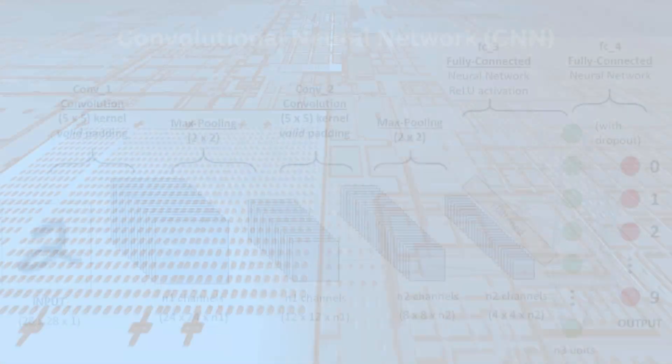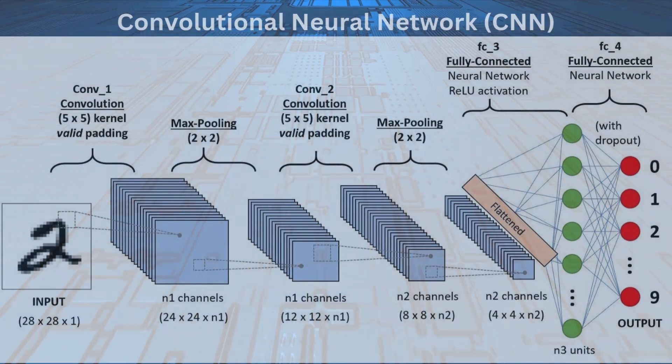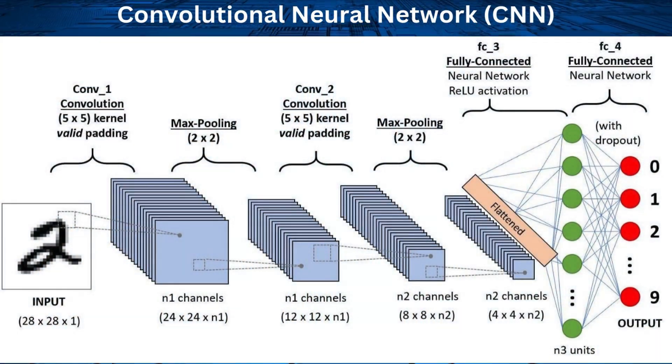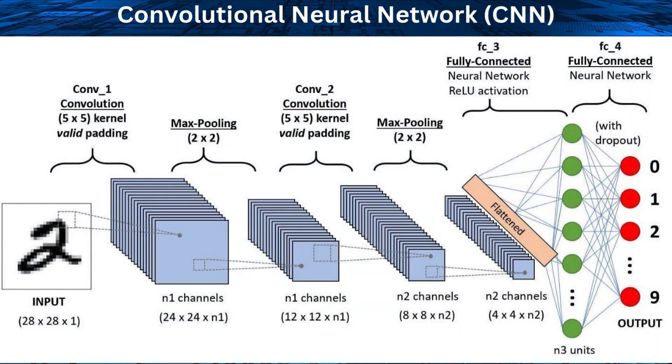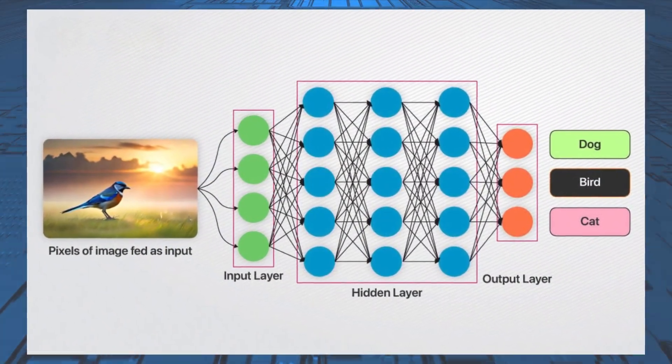In deep learning, we use convolutional neural networks algorithms for image datasets. This algorithm is efficient for detecting objects on images, videos, and in real-time. Here, input image is bird, so the output predicts is bird.